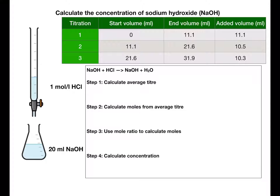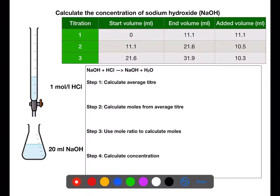Here we've been asked to calculate the concentration of sodium hydroxide (NaOH). We've been given a titration table showing the start, end, and added volumes for the titration. The burette contains 1 molar hydrochloric acid, and in the flask we have 20 mL of sodium hydroxide, which is what we're trying to find the concentration of.